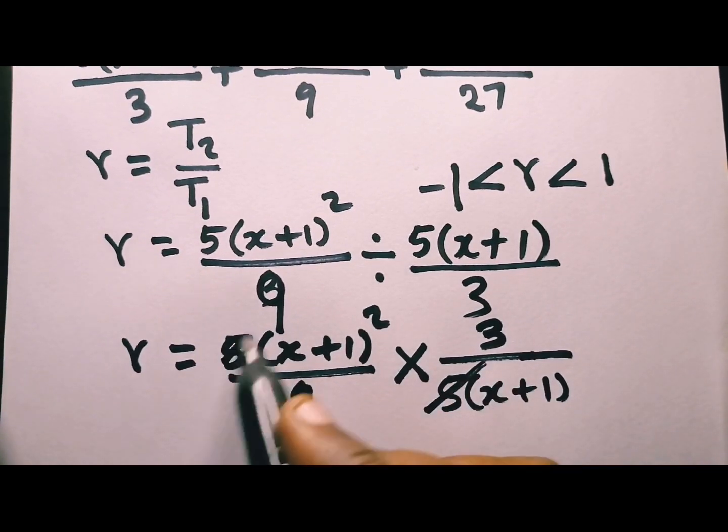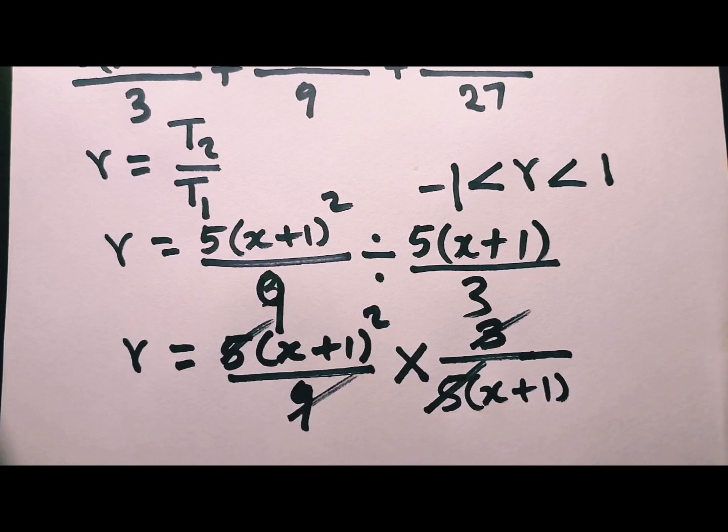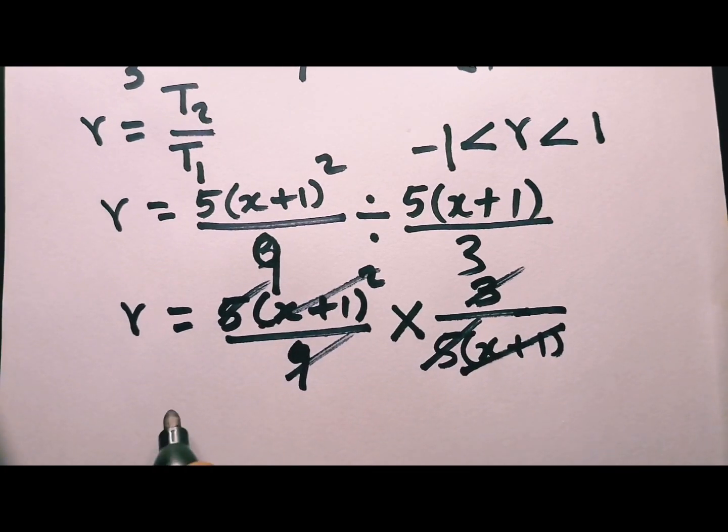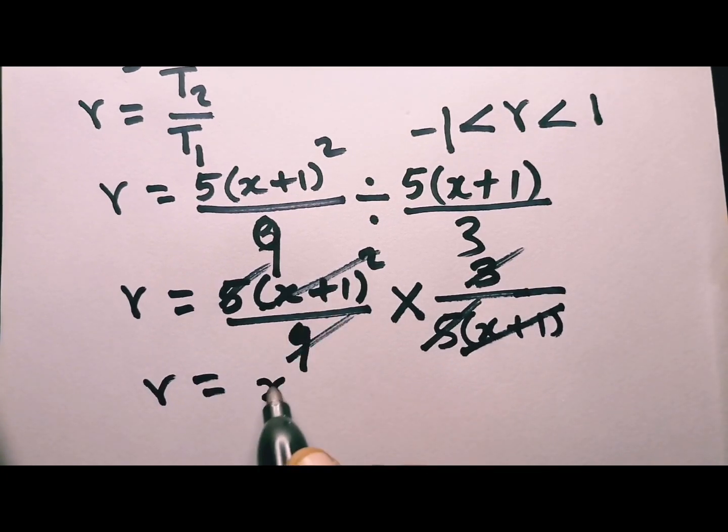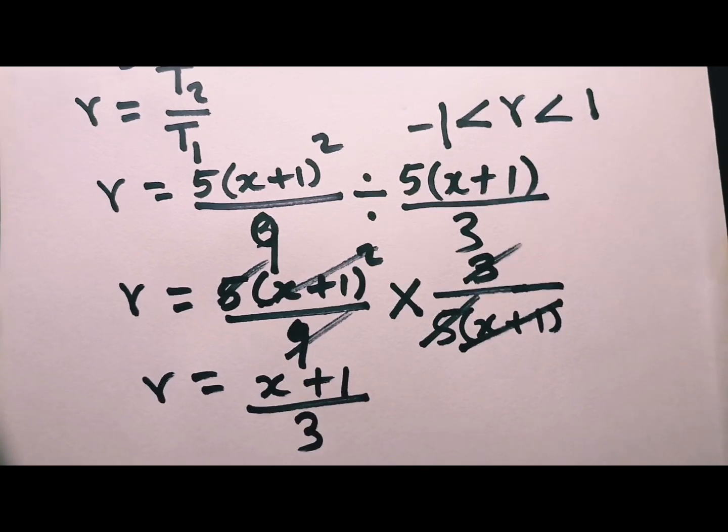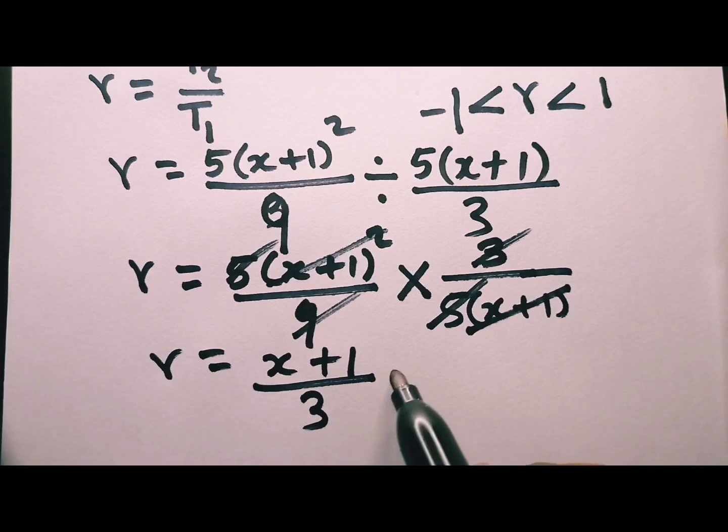From this case, this 5 will cancel this 5, this 3 will go here 3 times, and then one of this bracket will take one of the brackets there. So what do I have? I have r. What is left here? I'm left with x plus 1, but here I'm left with 3. So this is going to be my r.